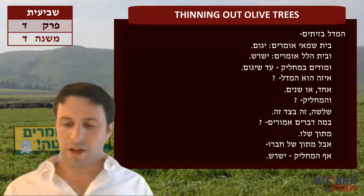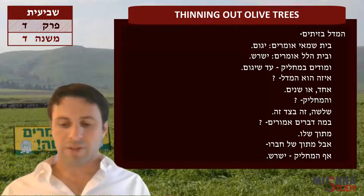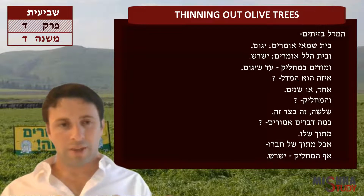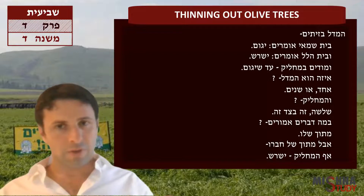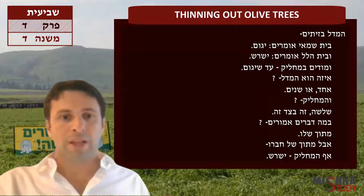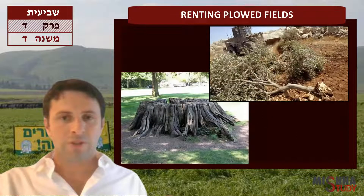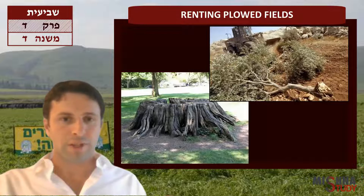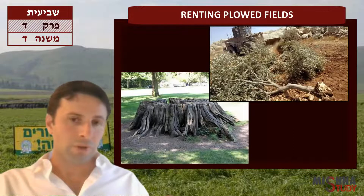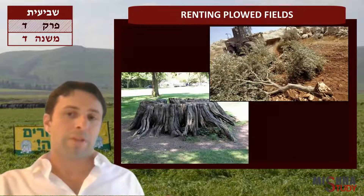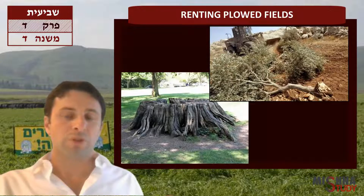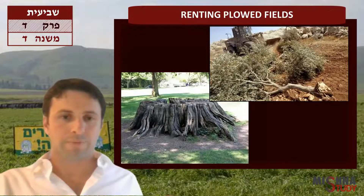He cuts the tree down to the ground but leaves the roots, leaving a tree stump. Beit Hillel says yashoresh — Beit Hillel says you're allowed to actually uproot the tree. I put a picture of both. The left one is the yagom — you see the olive tree with the tree stump. The point is you have to leave the tree stump. Beit Hillel says yashoresh — you're allowed to uproot the tree totally with all the roots.